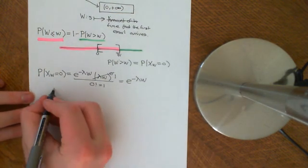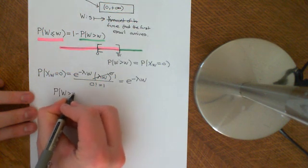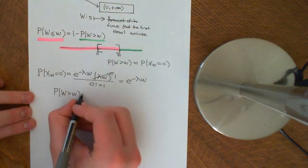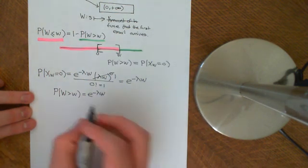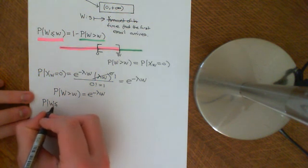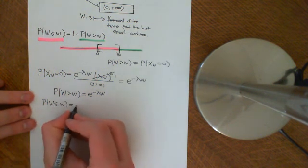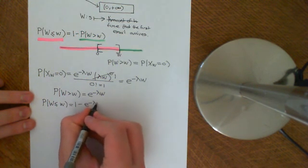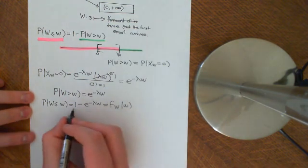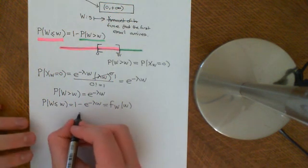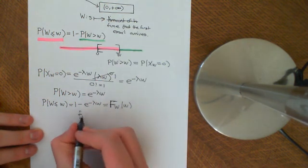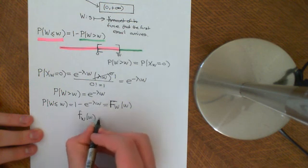So the probability that W is greater than little w — i.e., the probability that the time you have to wait for your first email is greater than little w — is equal to e to the negative λw. This tells us that the CDF of W is one minus e to the negative λw. Now let's differentiate to get the PDF. Differentiating one gives zero, and differentiating negative e to the negative λw gives us lambda e to the negative λw.